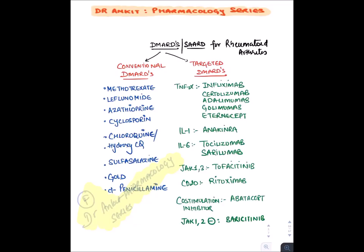Then we have targeted therapy, also known as biologics — we target and remove the inflammatory cytokines. We have TNF-alpha inhibitors: infliximab, certolizumab, adalimumab, golimumab, and etanercept. We have interleukin-1 inhibitor anakinra, interleukin-6 inhibitors tocilizumab and sarilumab, JAK1 and JAK3 inhibitor tofacitinib, and a new JAK1 and JAK2 inhibitor baricitinib (JAK stands for Janus kinase). We also have CD-20 inhibitor rituximab and co-stimulation inhibitor abatacept.